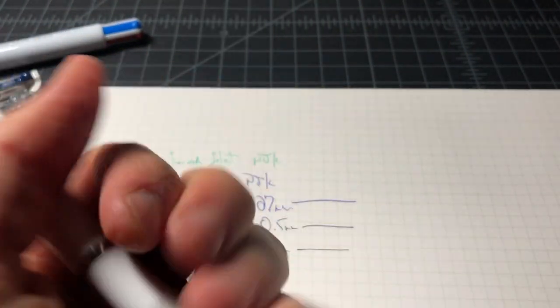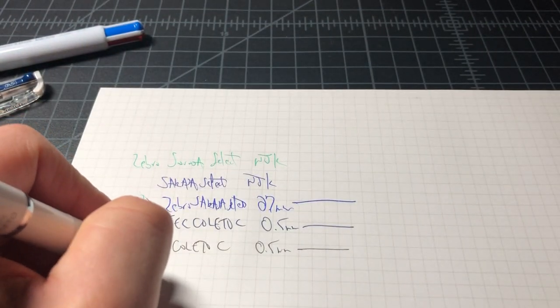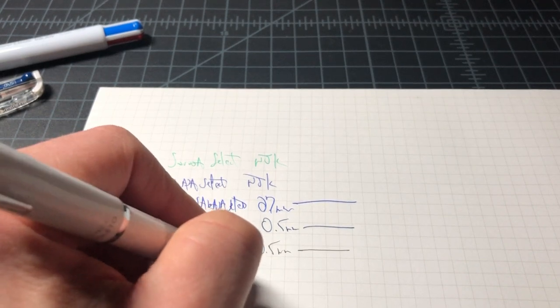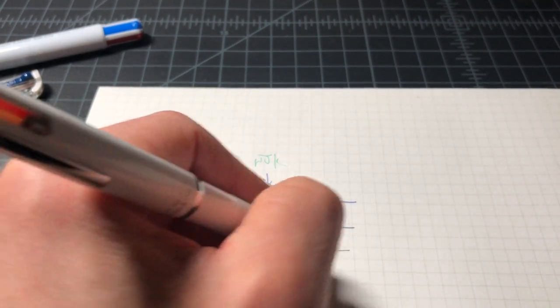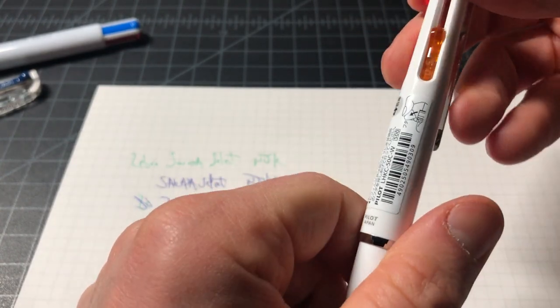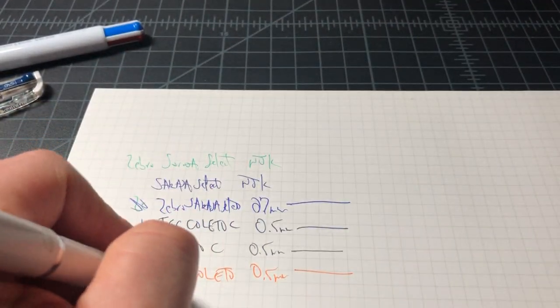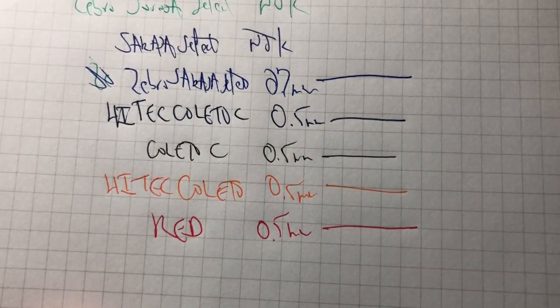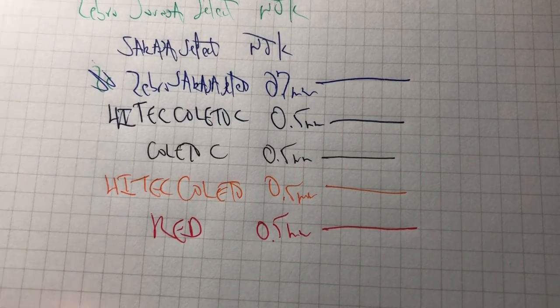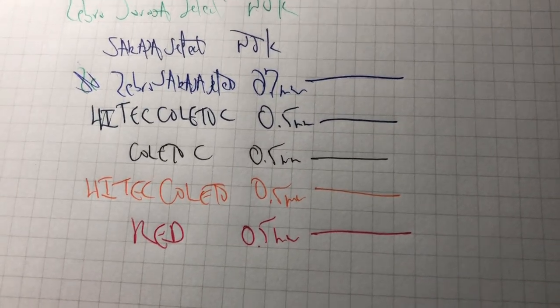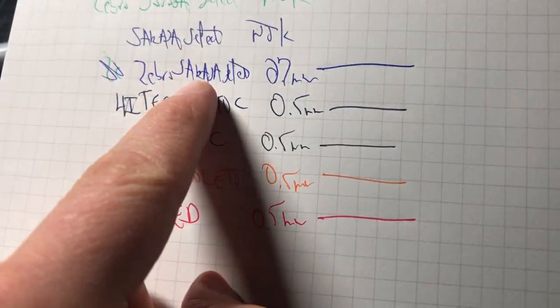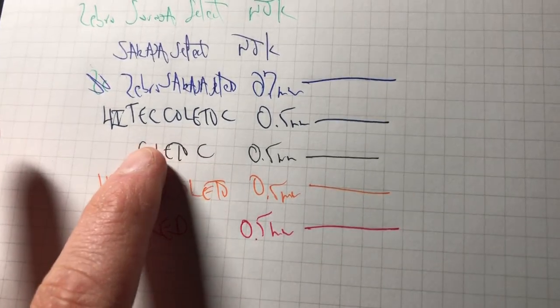And now we'll try in that orange, then we'll wrap it up. So really nice 0.5 millimeter, real sharp, fun to write with. I really like the Hi-Tec-C Coleto. It's definitely my pick.